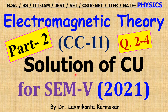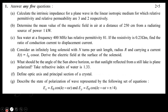Hello, welcome everyone. This is part two — in part one we already discussed question number one on the electromagnetic theory CC11 paper for Semester 5 of Calcutta University. This is the question asked in 2021. In this part we want to discuss questions two, three, and four. If you want the previous lecture solutions, links are given in the description box.